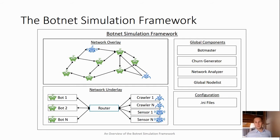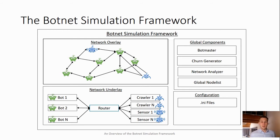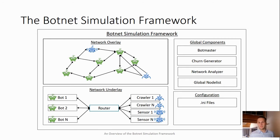So how do we recreate this in our simulation framework? Our focus is on the network overlay, where we simulate the interaction between bots, crawlers, sensors, and any other node you can think of. Underneath this is a network underlay — a star network with a router that connects all the nodes present, such as bots, crawlers, and sensors. We also have a few global components used to inject or track the progress of the simulation outside of the overlay, such as the bot master, which is a component that can inject a new command at any point in the network.